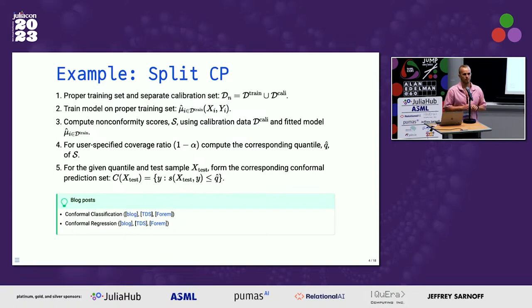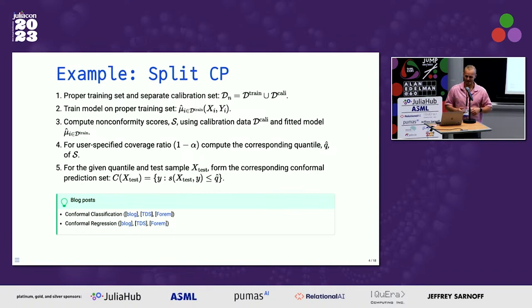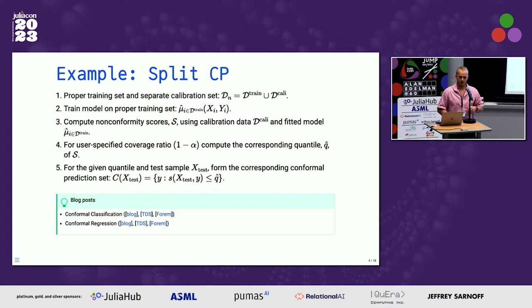One of the simplest versions of conformal prediction relies on data splitting. In deep learning, for example, we split our data into a proper training set, a calibration set, and then probably a validation set and test set. The calibration set is used to understand how uncertain the model is locally about certain predictions, and then at the test phase we use that information to generate something called prediction sets.